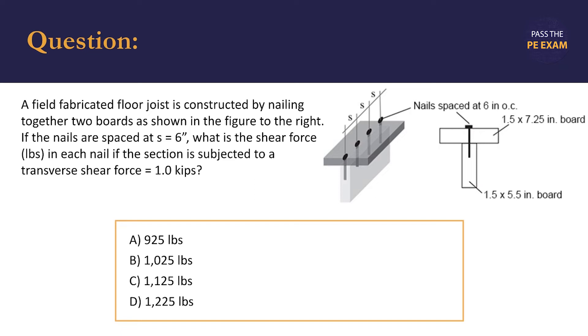In this statics problem, we're shown a field fabricated joist that is constructed by nailing together two boards. The nails are spaced six inches apart and the joist is subjected to a transverse shear force of one kip. We're then asked what is the maximum shear force in each nail and provided the following options: A, 925 pounds; B, 1,025 pounds; C, 1,125 pounds; and D, 1,225 pounds.